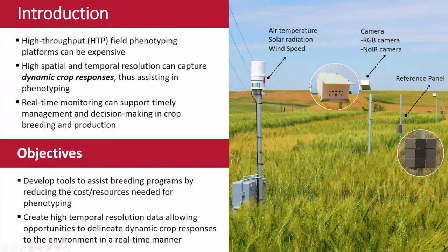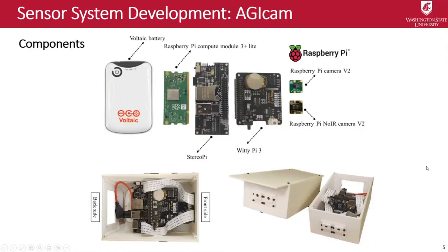This is the crop field equipment we installed in our first season three years ago. We have a weather station, camera, and a reference panel. The camera is made from a Raspberry Pi product — that's the main component. Our camera system consists of two cameras: an RGB camera and an RGB camera with the infrared filter removed, so the camera can receive the near-infrared spectrum. We also developed the enclosure using 3D printing so we can install them in the field.